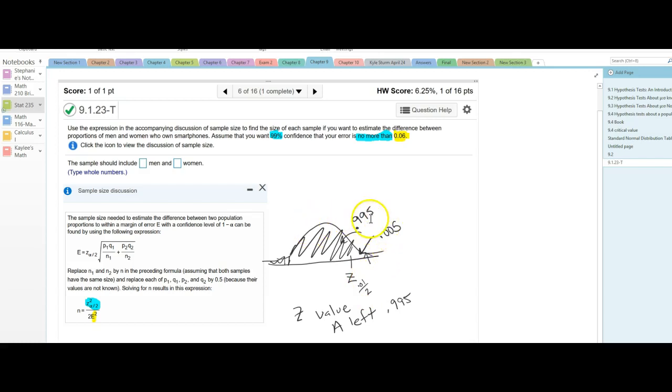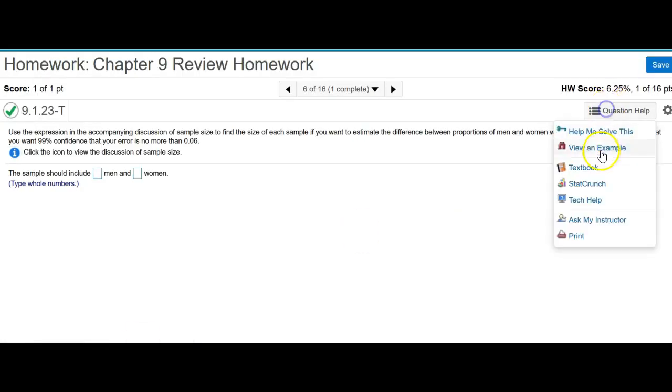So if I take 1 minus 0.005, that gives me 0.995 for my area that I look up. And so if I go to a table, or if I pull up StatCrunch in this case, let's just pull up StatCrunch.